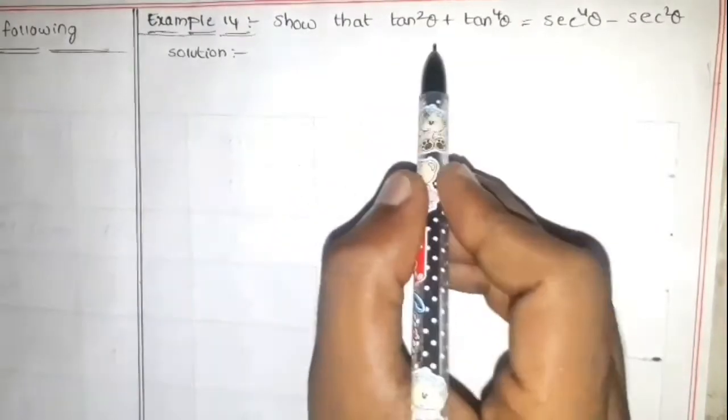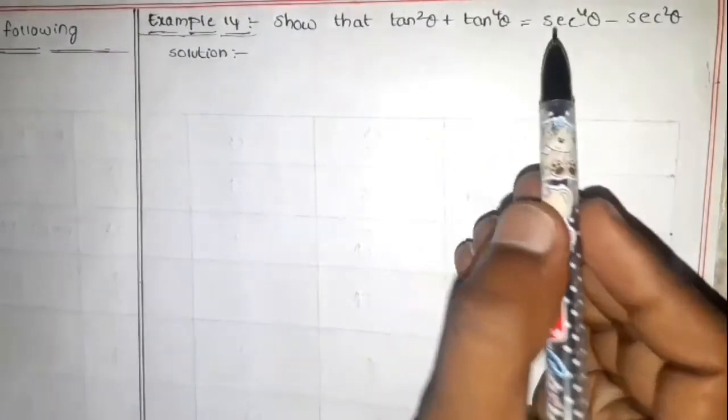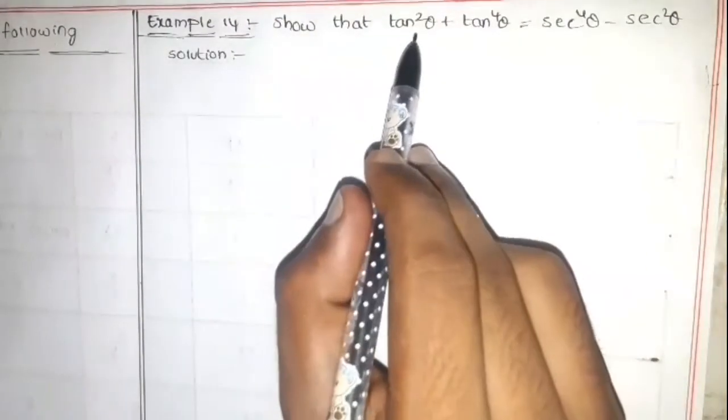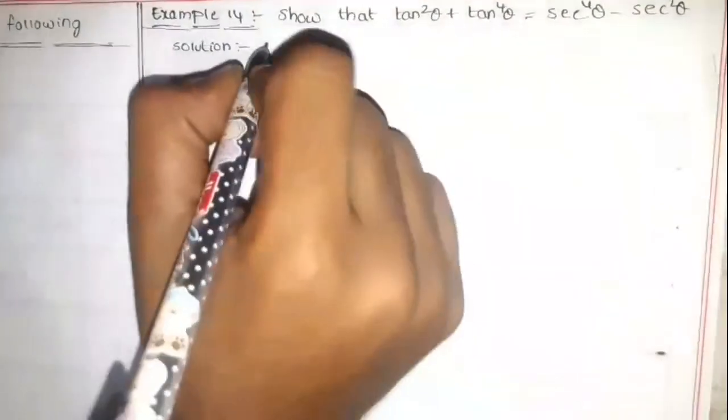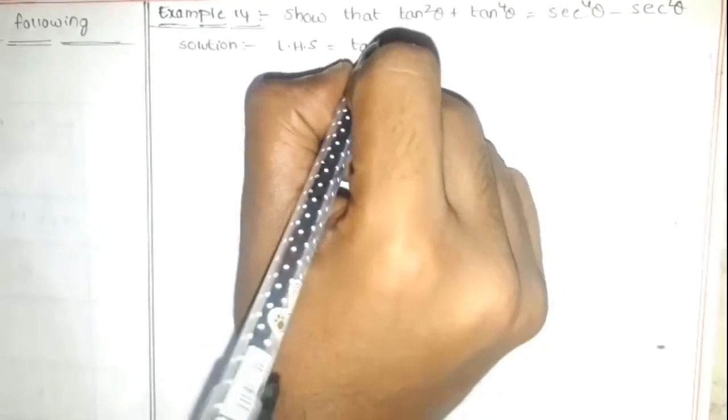Our last topic is trigonometric identities. We have three trigonometric identities: sin² θ + cos² θ = 1, sec² θ - tan² θ = 1, and cosec² θ - cot² θ = 1. Let us solve an example to prove that tan² θ + tan⁴ θ = sec⁴ θ - sec² θ.